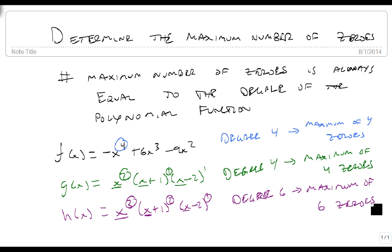So it's really easy if it's in standard form. It takes a little bit more work if it's factored, but mostly what you have to do is just count the number of x's. So 1, 2, 3, 4, 5, 6, and you're done. And that's how we determine the maximum number of zeros.